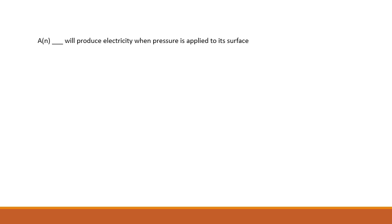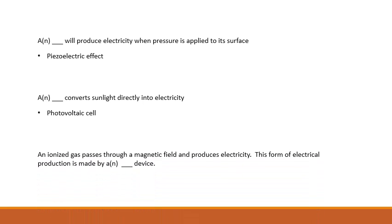A blank will produce electricity when pressure is applied to its surface — that is the piezoelectric effect. A blank converts sunlight directly into electricity — a photovoltaic cell. An ionized gas passes through a magnetic field and produces electricity; this is made by a magnetohydrodynamic device, or MHD.